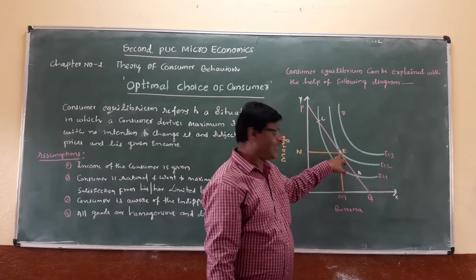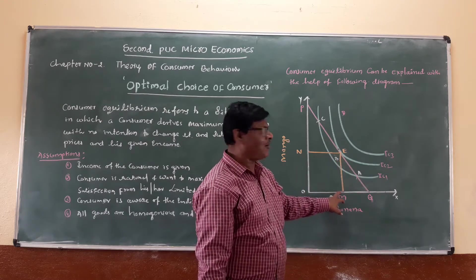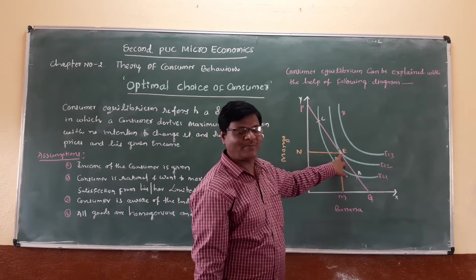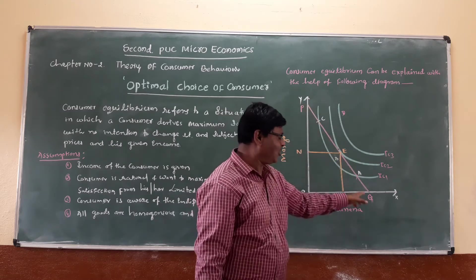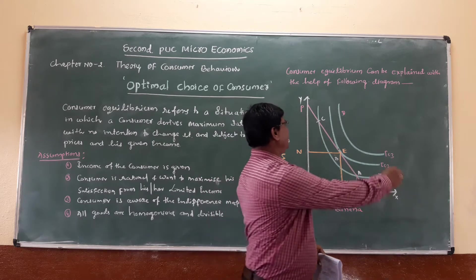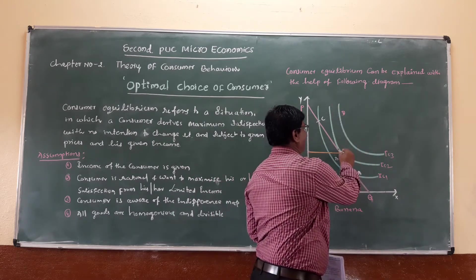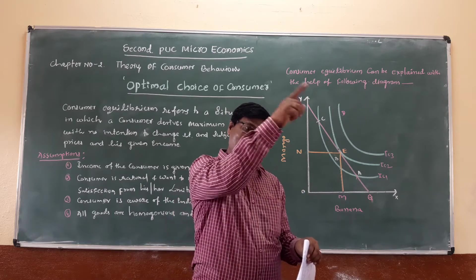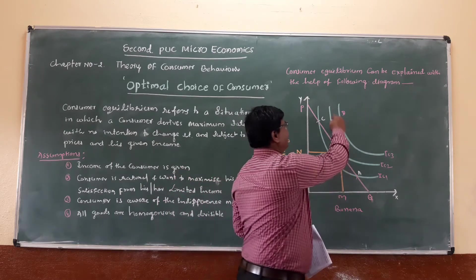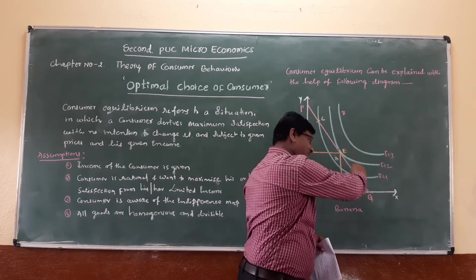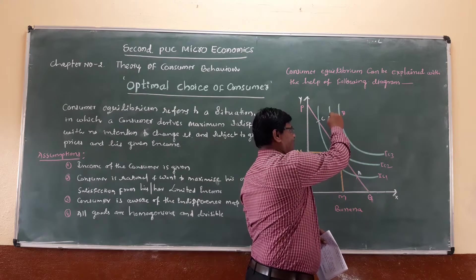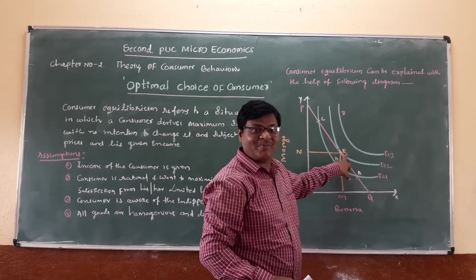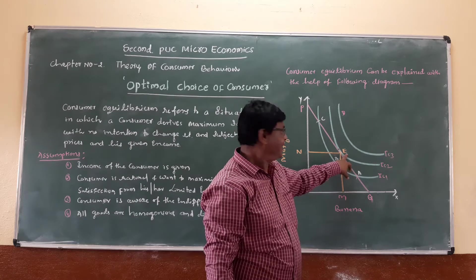At point E, the consumer purchases OM amount of banana and OM amount of mango. The consumer is in equilibrium at point E. The price line PQ is tangent to indifference curve IC2 at point E. PQ is the price line, which is tangent to curve IC2 at point E, and E represents the equilibrium of the consumer.